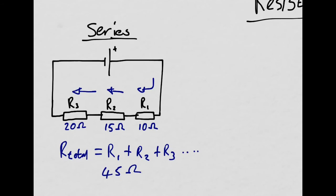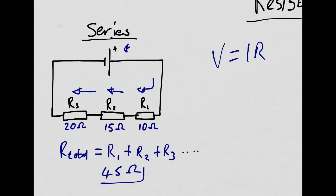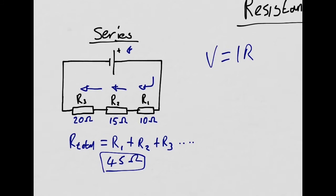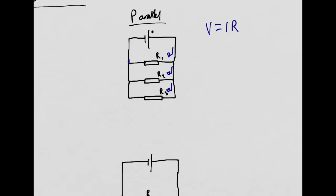In the series circuit, you can use V equals IR to work out the current through each resistor — just take the voltage of the power supply and divide it by the total resistance, which in this circuit is 45 ohms.